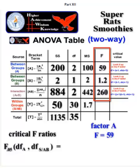So we're going to compare our factor A F of 59 to the critical value F at 2 degrees between groups, right, that's going to be your across-the-top row, and 30 degrees within group.